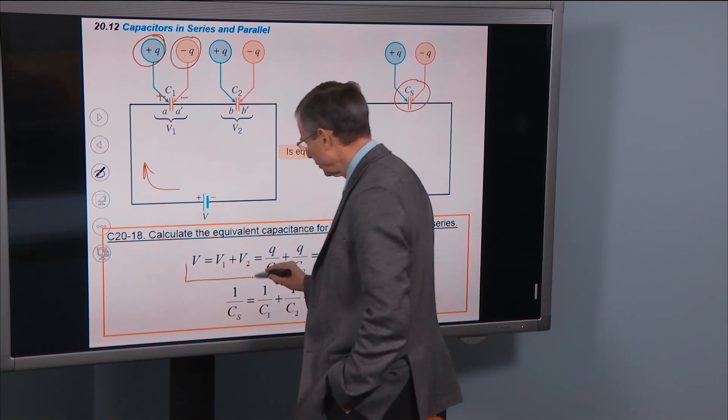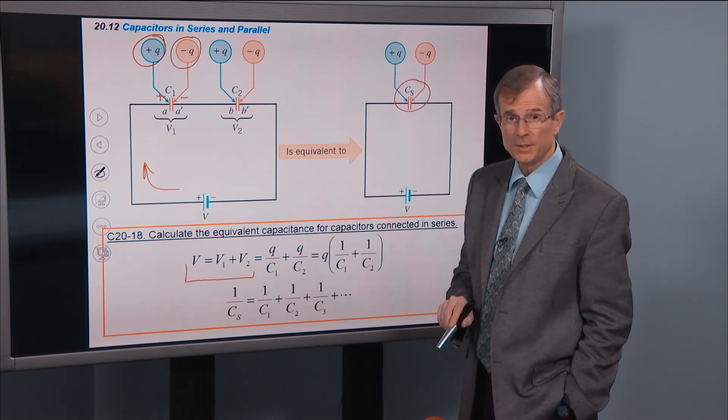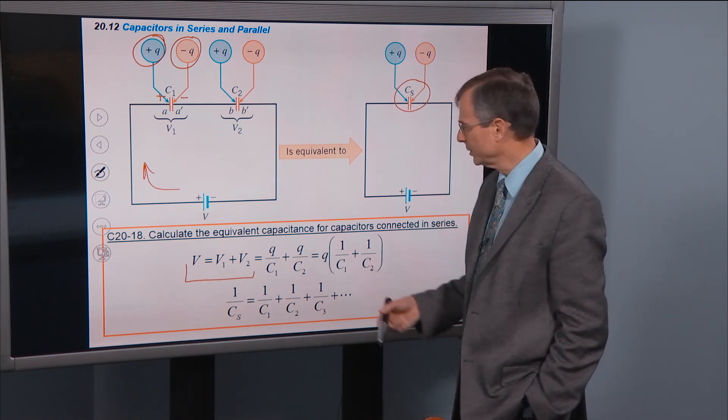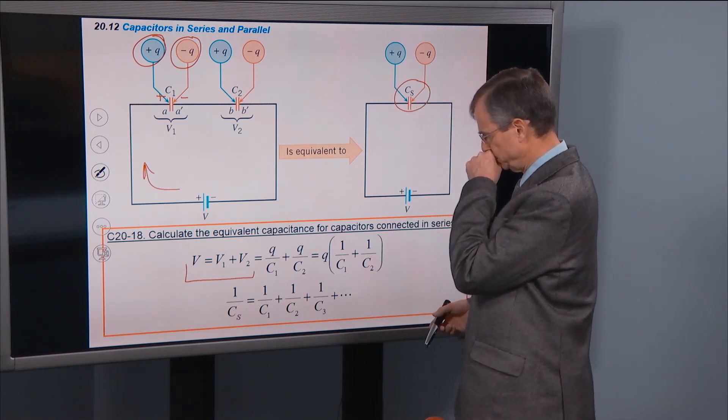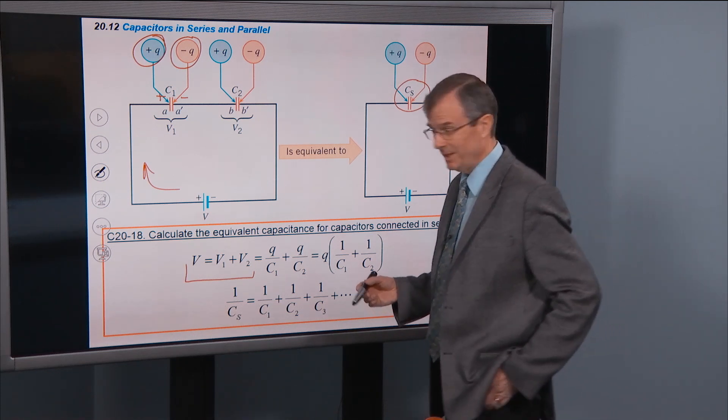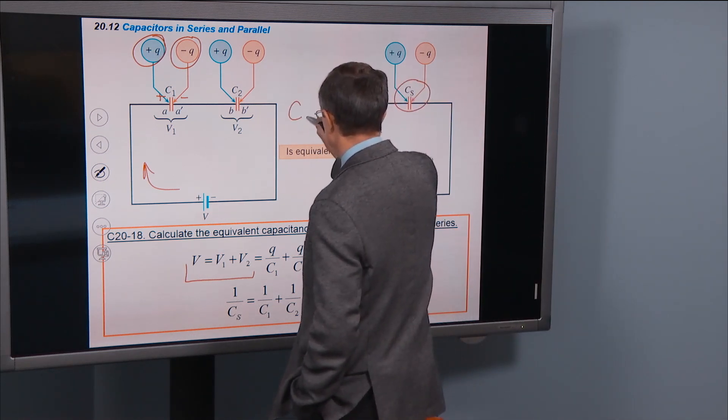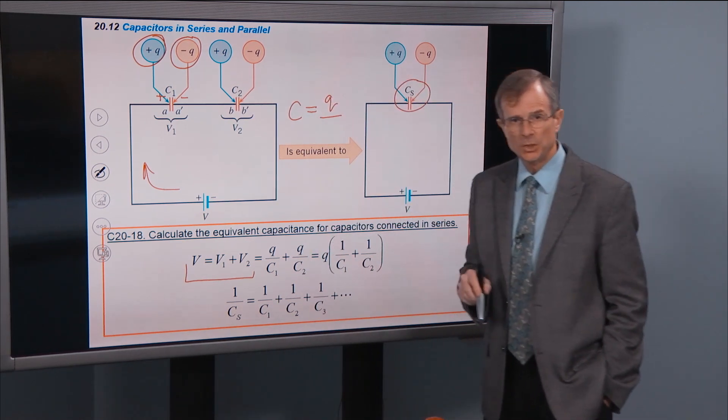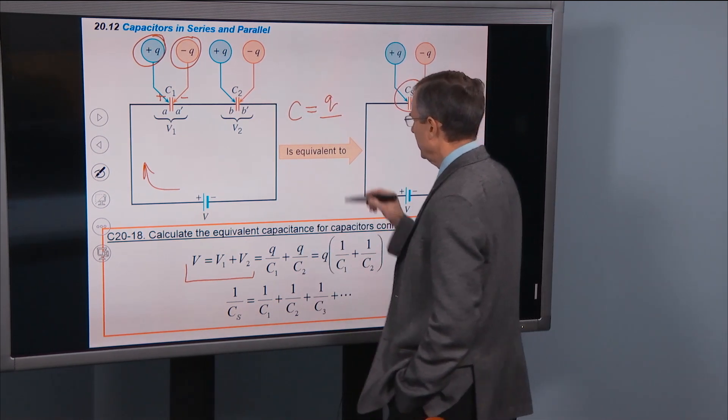We added up the voltages, V1 plus V2, the voltage across the first capacitor plus the voltage across the second capacitor. You may recall, I hope you do, that the capacitance is q divided by the voltage.